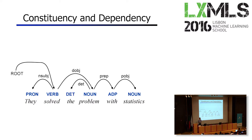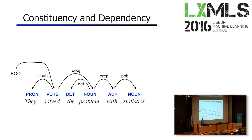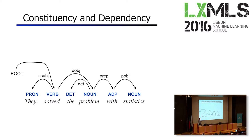Audience responses suggest: they're always the same; dependencies are richer; it's asymmetric; and somebody voting for constituents being richer. The instructor summarizes: everybody's true to some extent. It depends a lot on exactly what you put in the label set, because you can add information to the label set. But there are certain things that just become very hard or impossible to model.